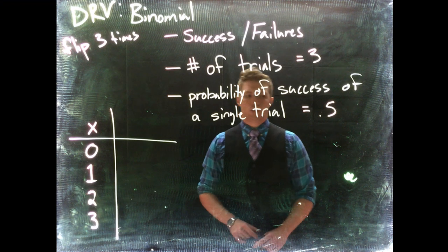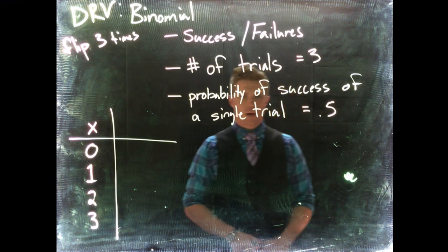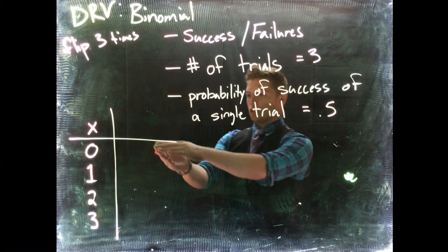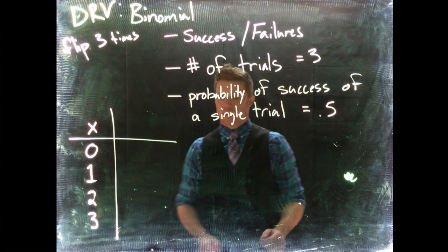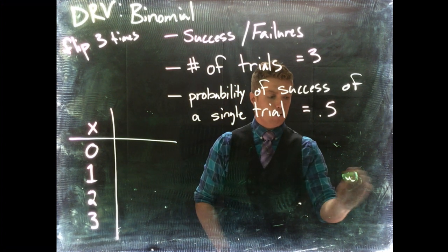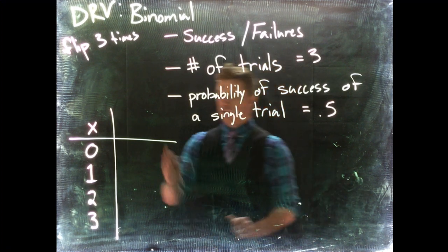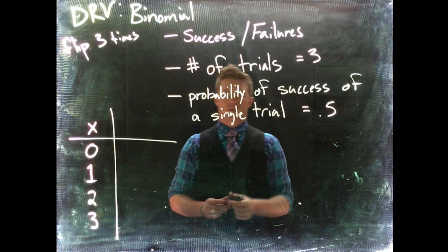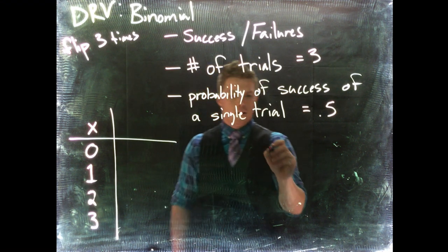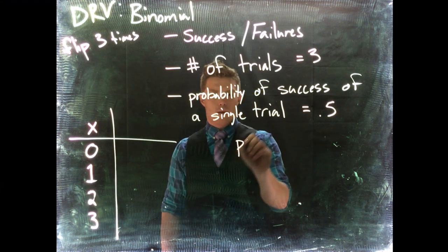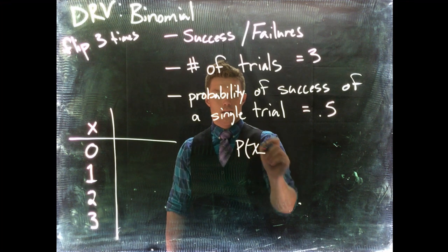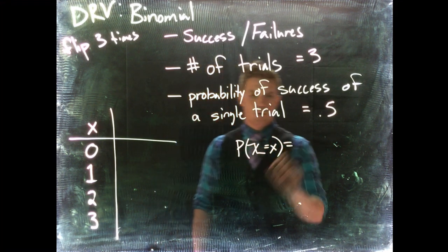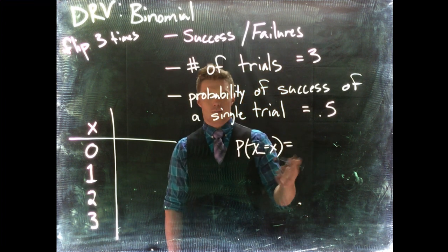Now in the binomial distribution, we actually have an equation that will let us know how we can determine our probabilities of each event without knowing what those actual probabilities are. All that we need to know is the probability of success and the number of trials. So our probability, our PMF function, this guy, is going to equal to, we're actually going to use some of our combinations.